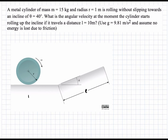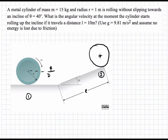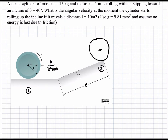Let's define state one as the initial state, and state two as when the cylinder is at the top, having traveled distance l. We set a datum for potential energy at the center of gravity of state one, so we can cancel the potential energy at state one. We set an initial omega, and at the final state there is no rotation because it reaches a complete stop, so there is no kinetic energy or omega at that state.